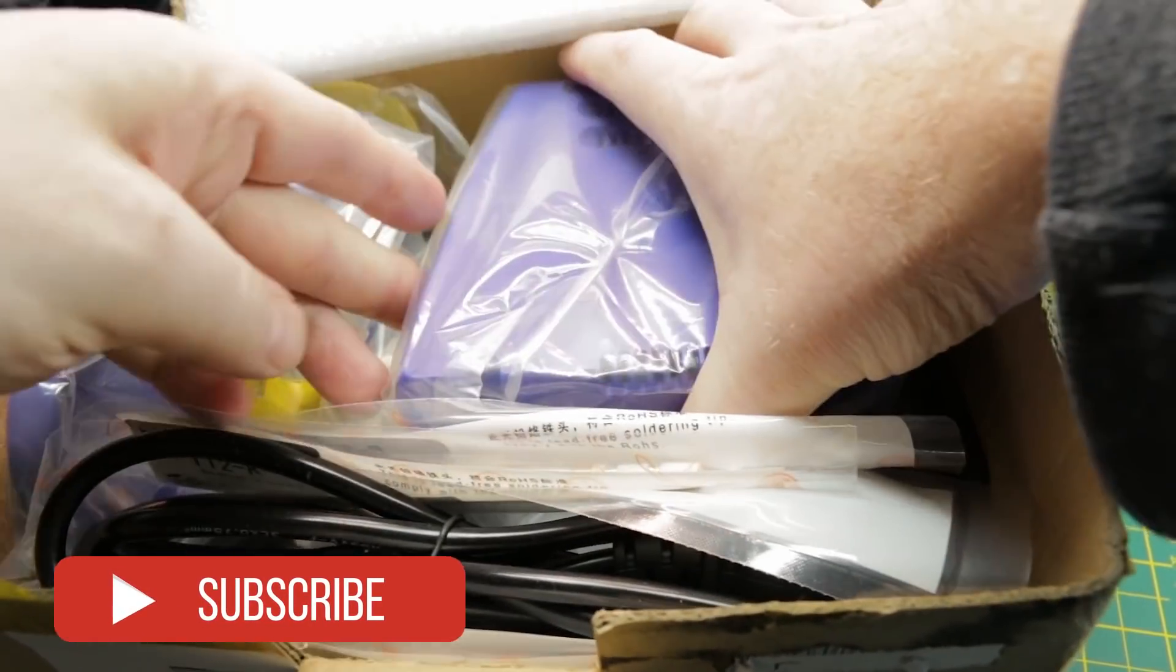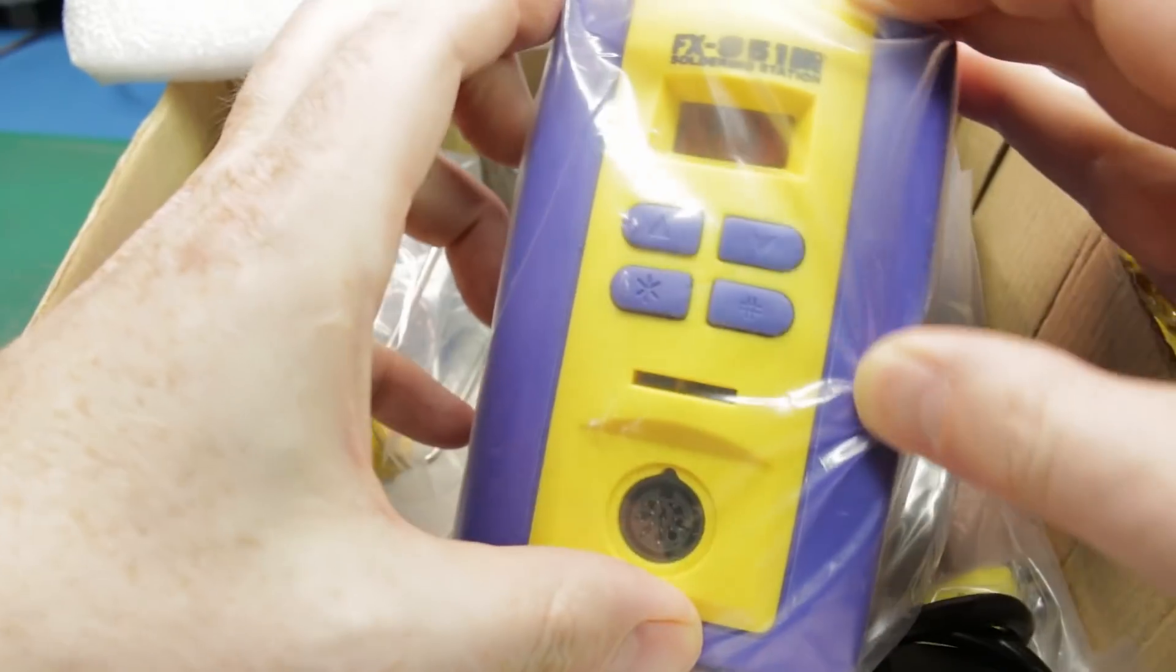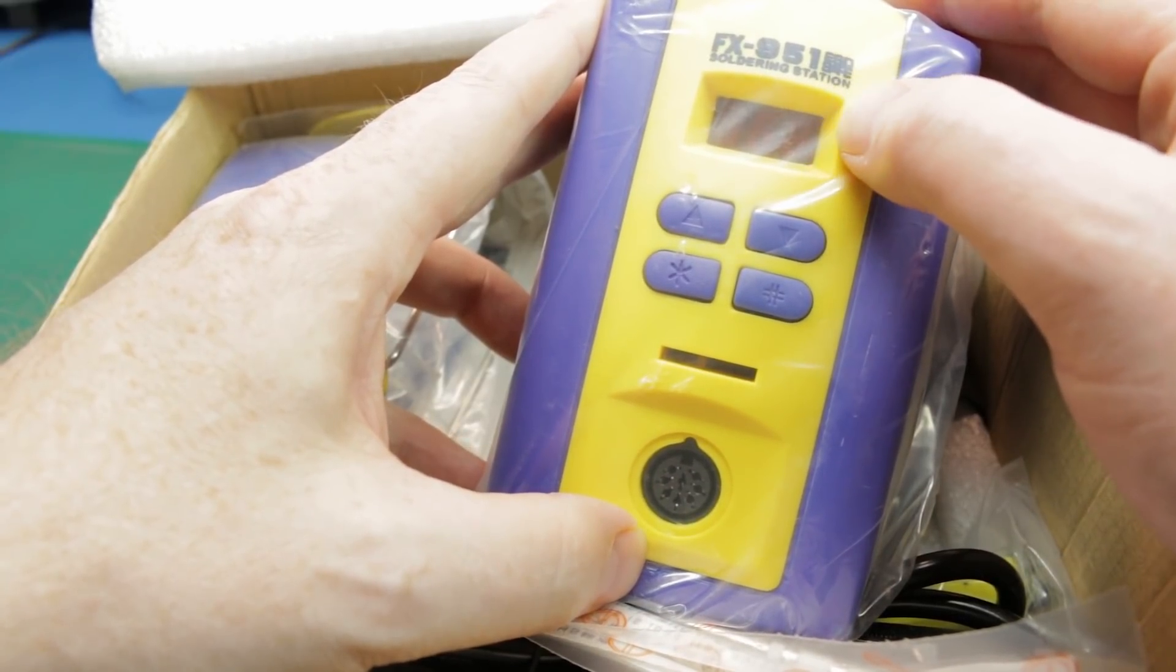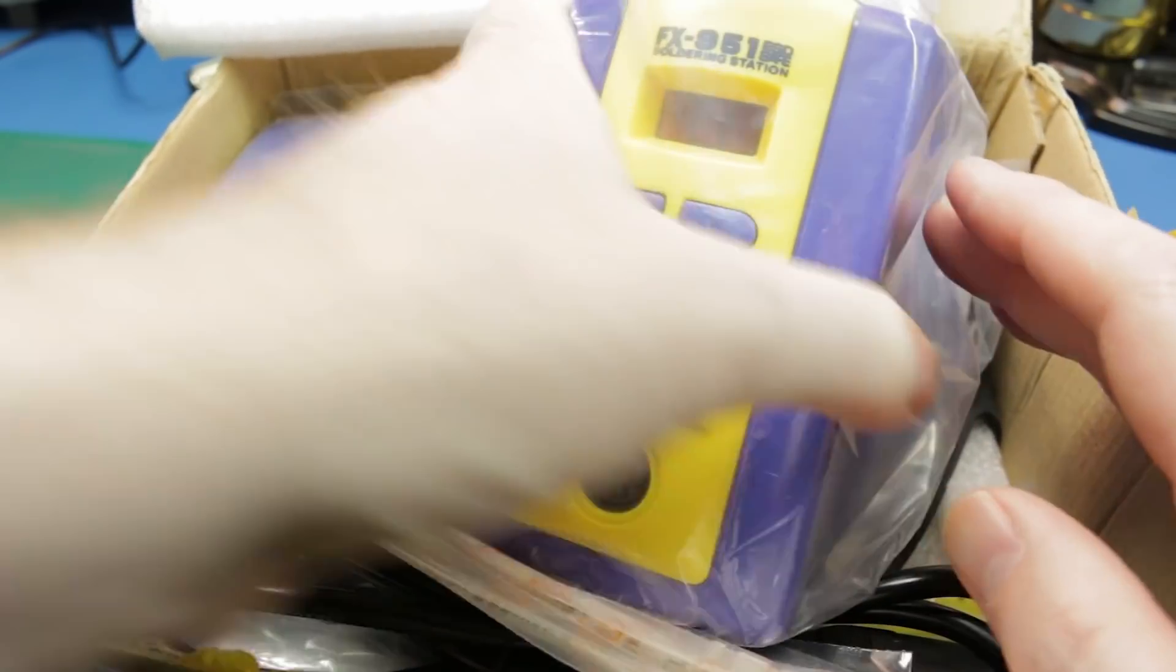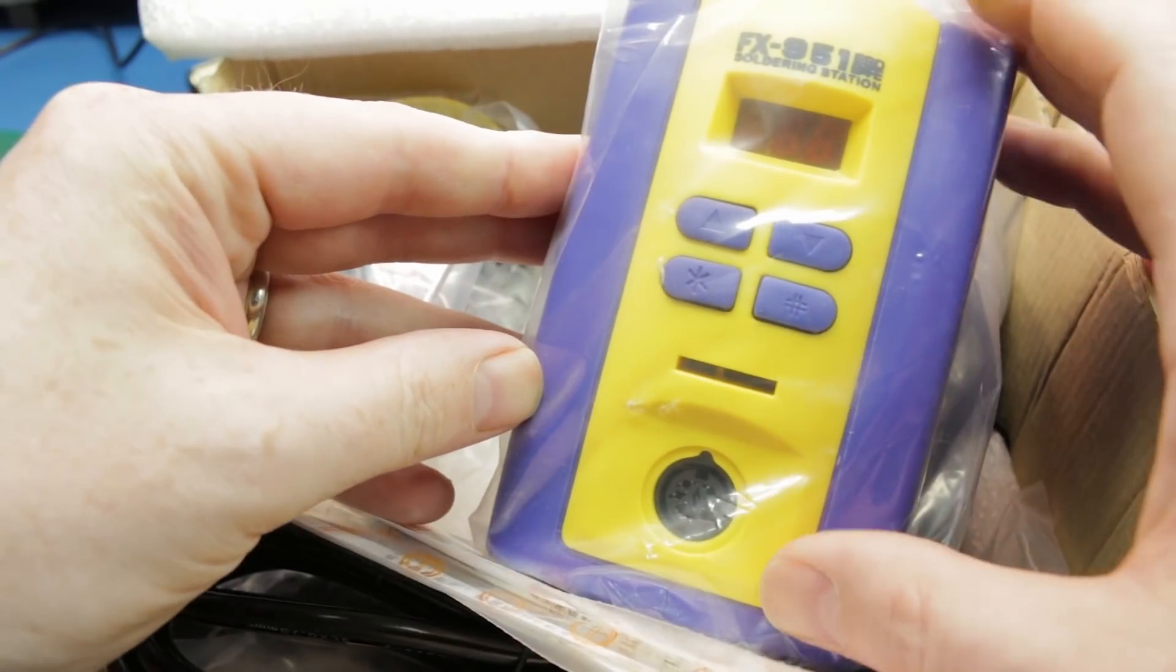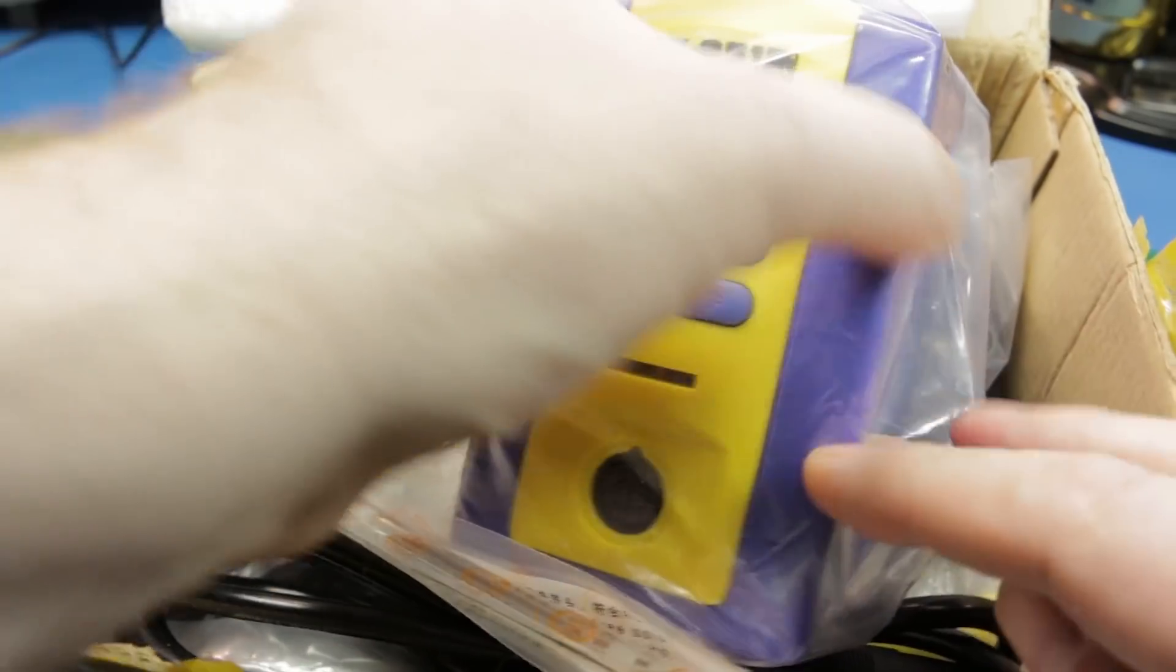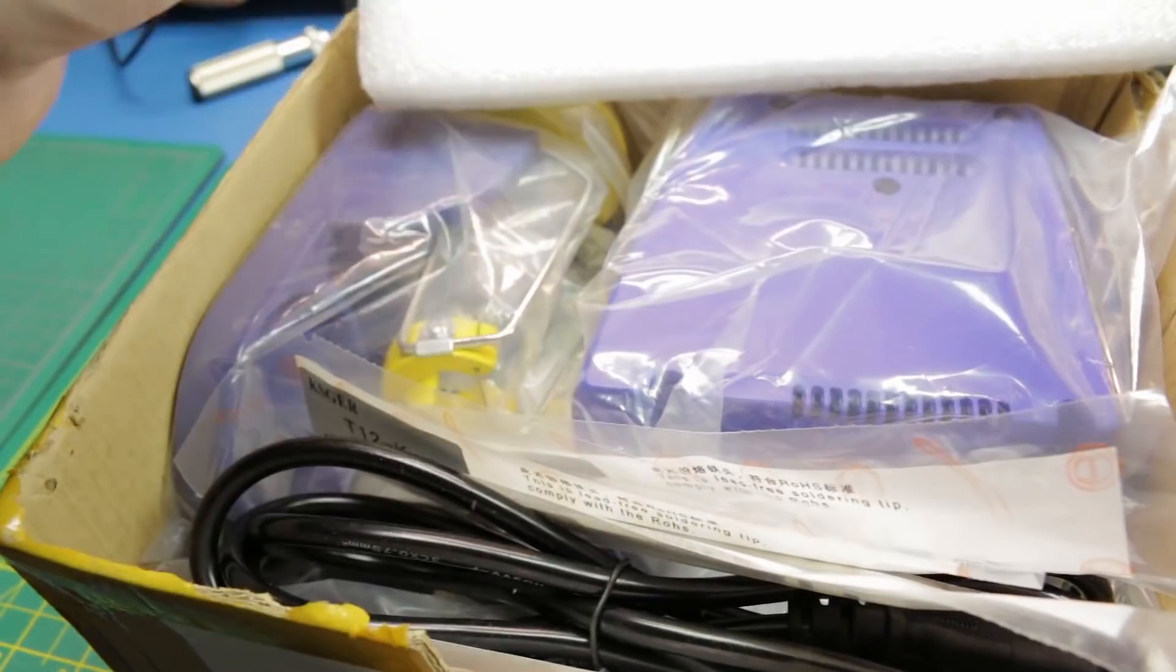First up, we have a new Hakko or Heiko, depending on where you are or what you subscribe to for the name, but this is the FX951. This is most definitely a clone of the Hakko Iron, and we're going to give it a complete go just because this thing is so reasonably priced compared to some of the other options out there. I had to test the clone for you guys and see how this goes. So this is the entire kit as it came. We'll see how it goes.